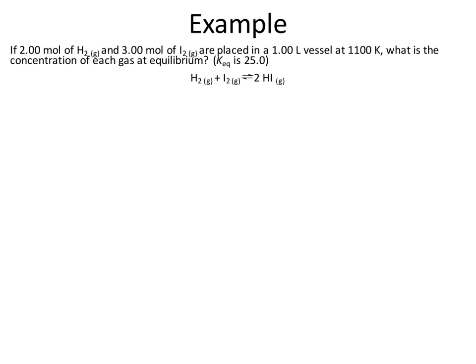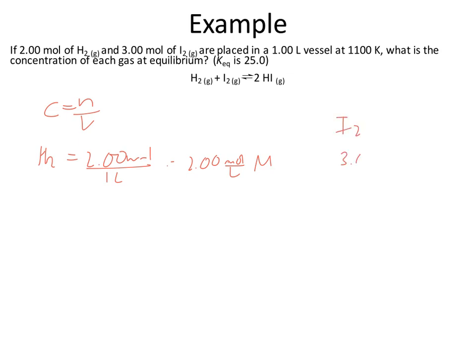First, we need to convert moles to concentrations since our ICE table uses concentrations. Using C = n/V: for H₂, that's 2.00 mol divided by 1 liter, giving 2.00 mol/L. For I₂, that's 3.00 mol divided by 1 liter, giving 3.00 mol/L. Now we have our initial concentrations and can start building our ICE table.